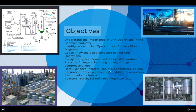Heat exchangers — we do that as well: coolers, condensers, and boilers. Then we continue with mass transfer or separation processes. The most important ones are flashing, distillation, absorption, fractionation columns, and extraction.